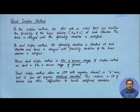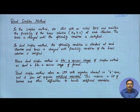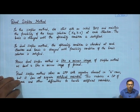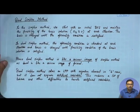The dual simplex method solves a linear programming problem with negative elements in the b rows, but it does not require any artificial variable. This reduces a lot of labor and other difficulties associated with handling artificial variables. In dual simplex, we use the negative element in the b row, and for that reason we never use artificial variables.